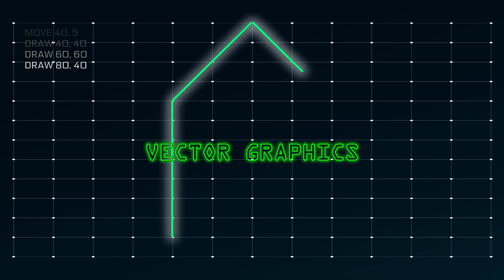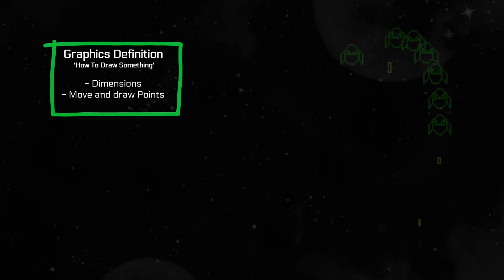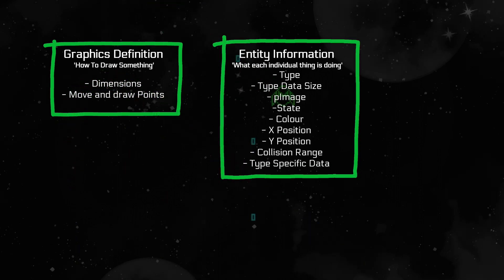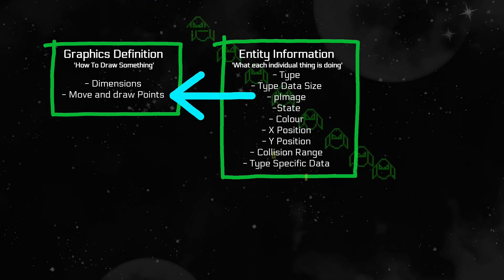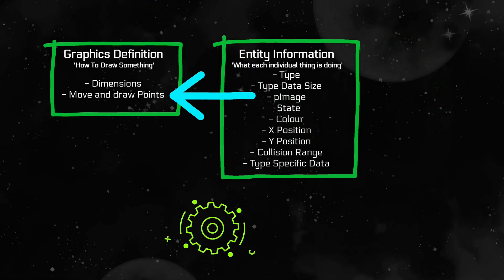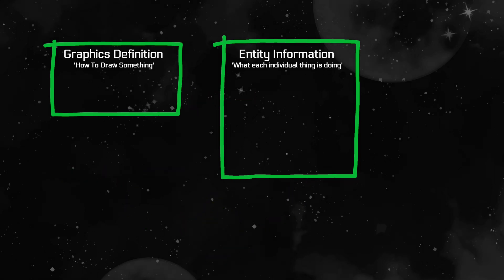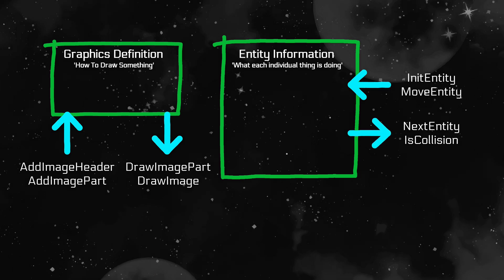I used vector graphics so I could write my game in BASIC without knowing how the screen memory was arranged, but I needed to store how things would be drawn using a graphics definition structure. For each individual item in the game I needed a structure to store entity information, which stores type, position and points to a graphics definition so it knows where and how to draw itself. To use my structures I have some general functions and procedures — functions to construct graphics definitions and draw them on screen. For each entity we have procedures to initialise, move them, iterate over a collection in memory and to detect collisions.